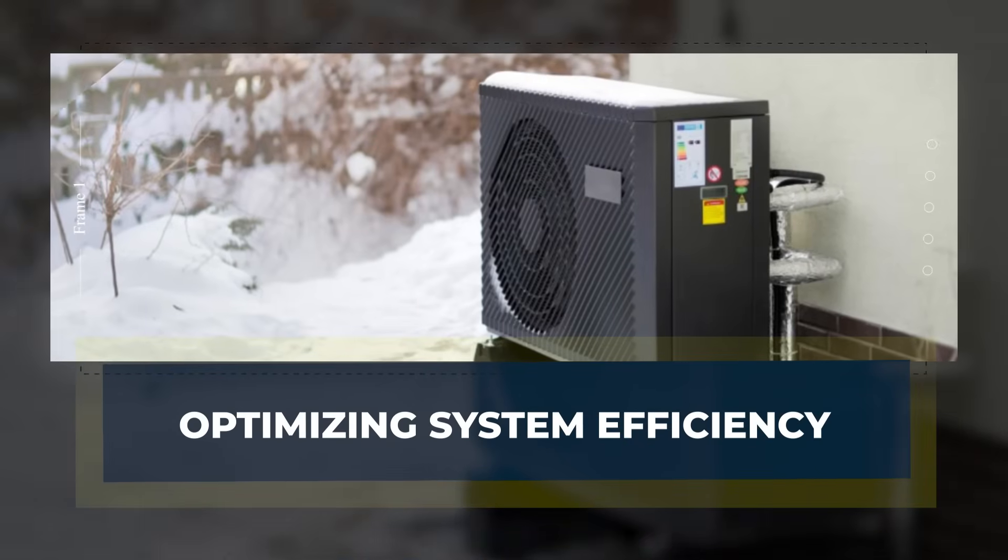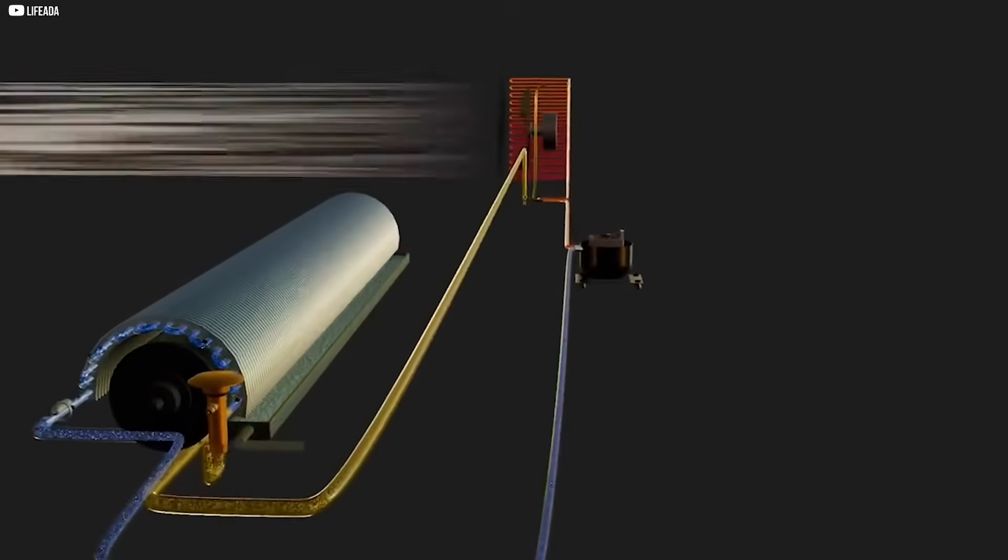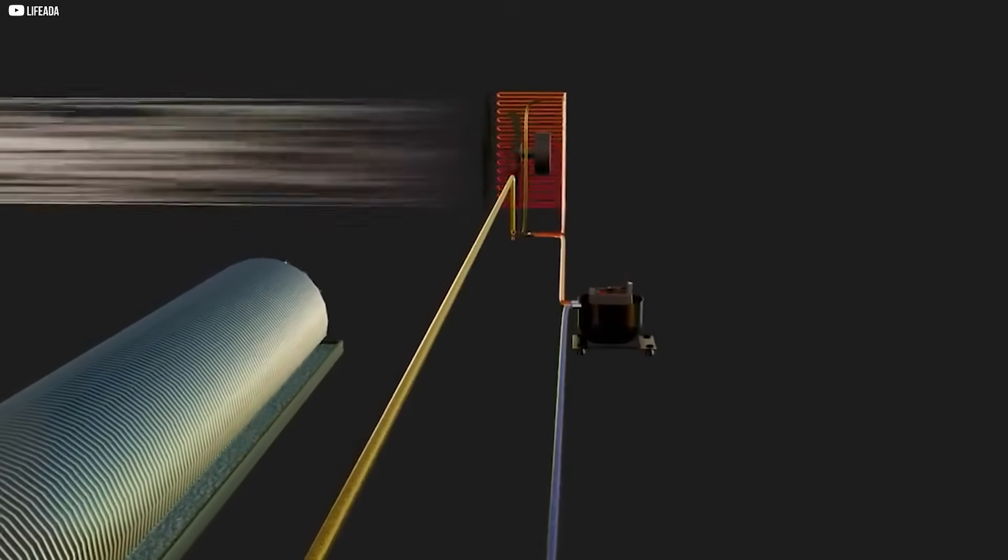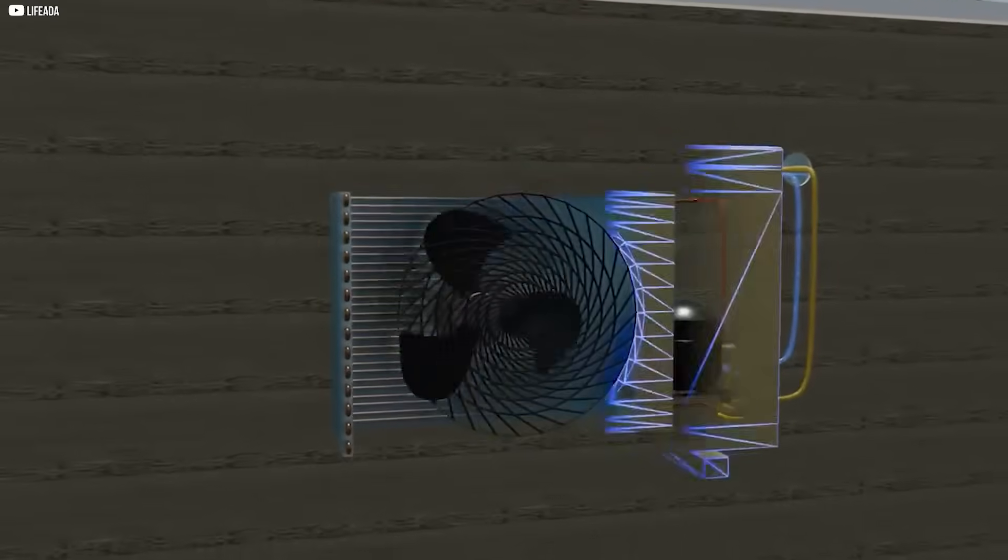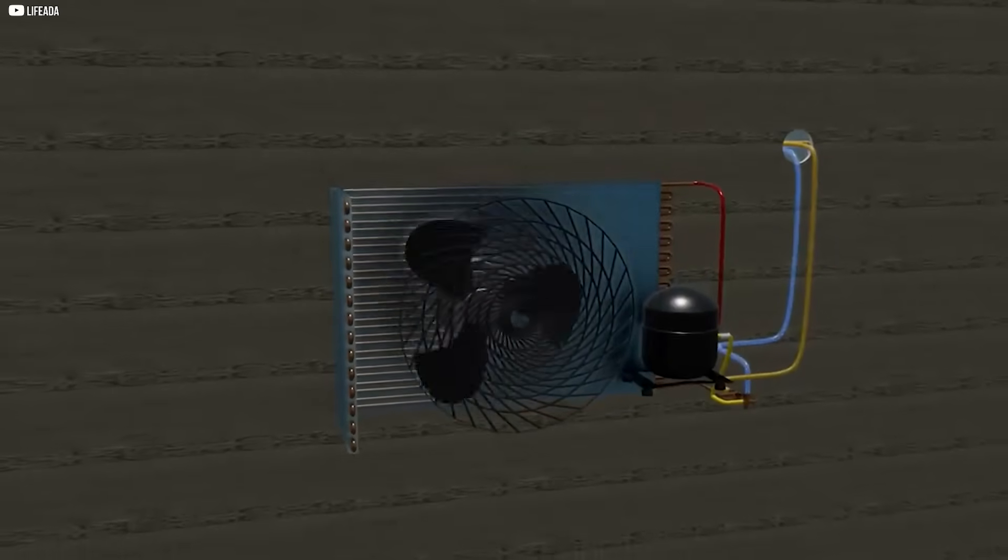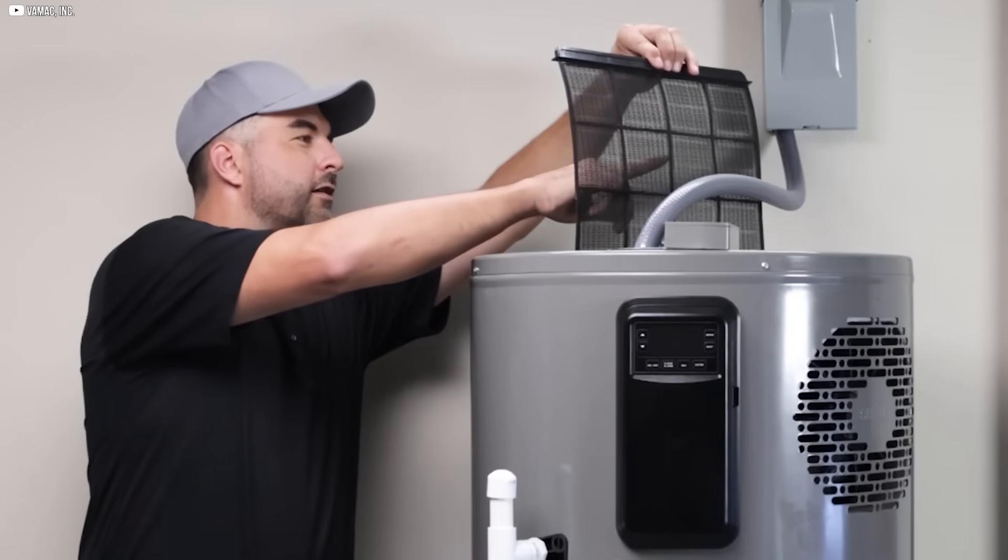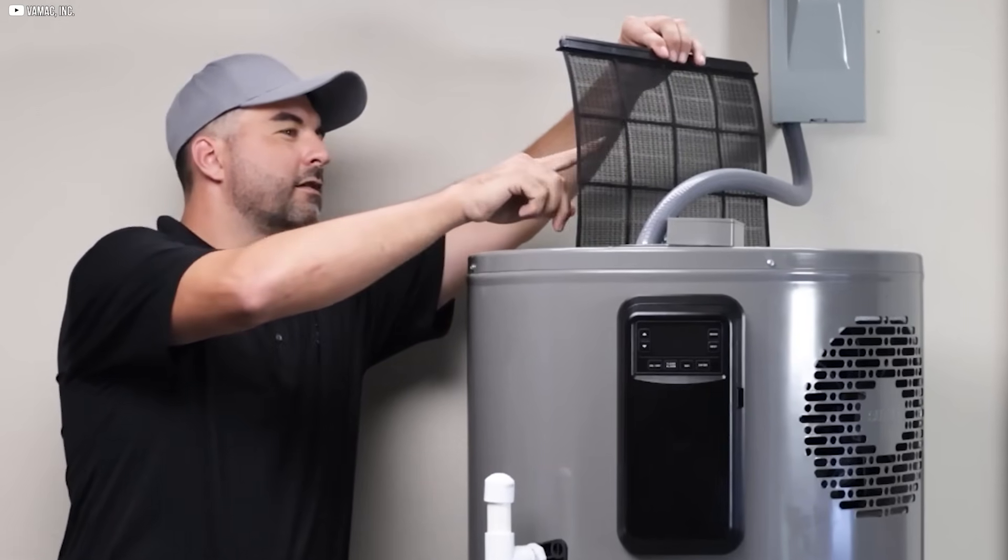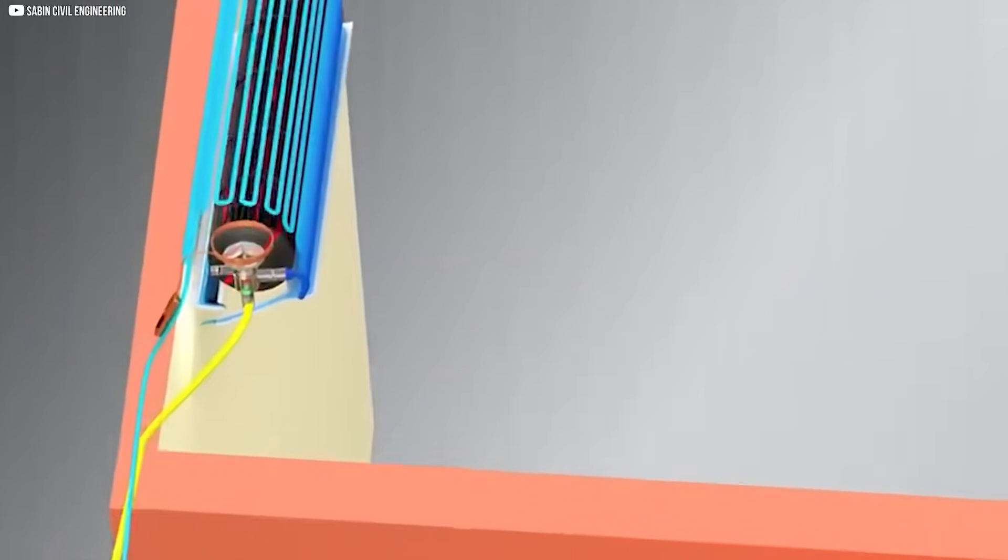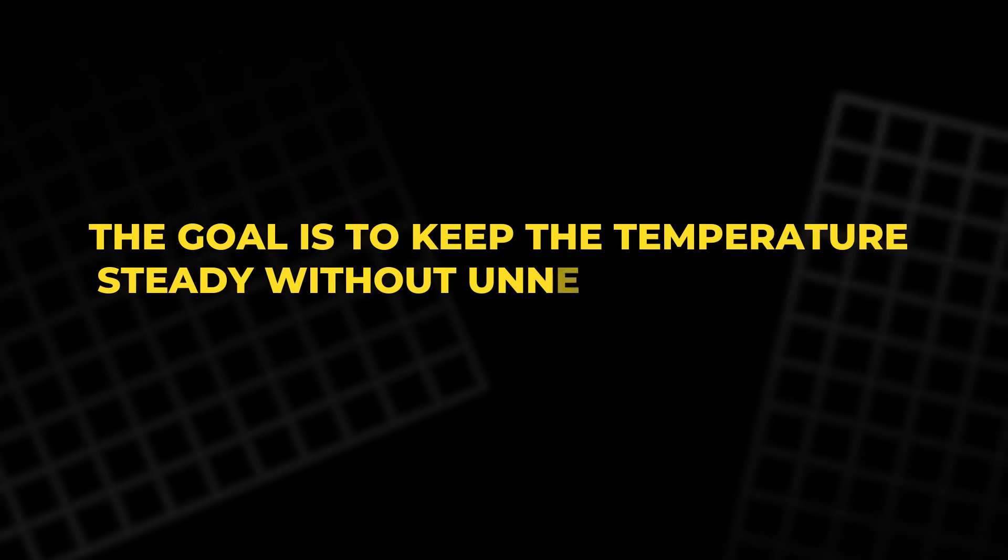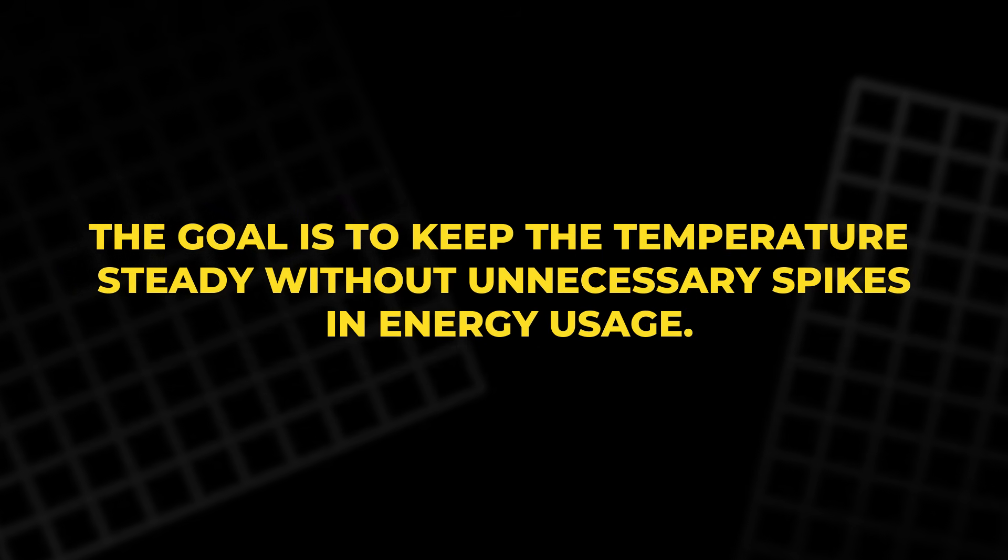Optimizing system efficiency. Achieving the highest efficiency in a heat pump system goes beyond the equipment itself. It's about how the system is designed and how well it works with the rest of the heating infrastructure in your home. Adam Chapman explains that a well-functioning system needs to be viewed as a whole, from the heat pump to the radiators and the way the system is balanced.